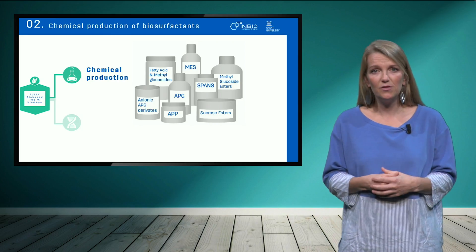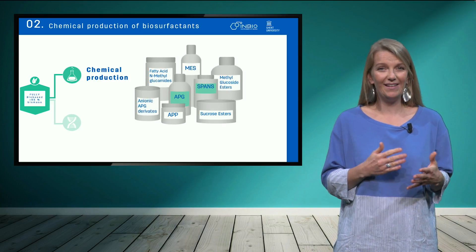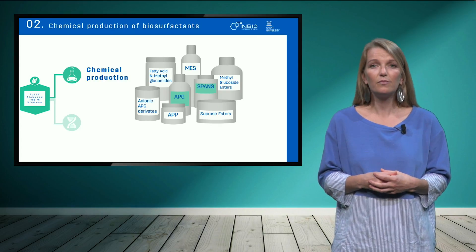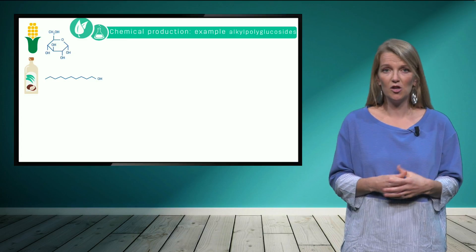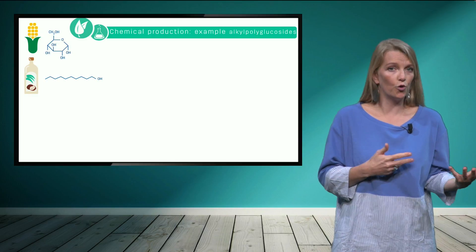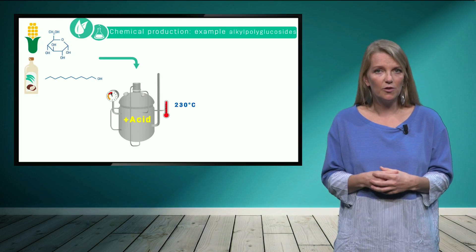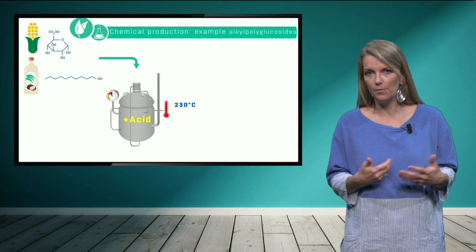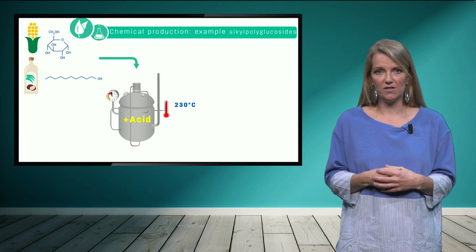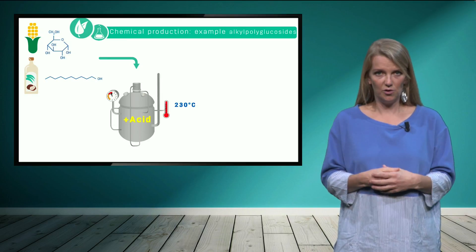I will first explain two examples of chemically produced biosurfactants: APGs or alkyl polyglucosides, and SPANS or sorbitan esters. For the production of APGs, glucose and fatty alcohols are used, which can for example be derived from corn and coconut oil respectively. These will be added into a chemical reactor and the reaction will take place at high temperatures — which is quite energy intensive — and under acidic conditions, with certain chemical catalysts added to enhance the reaction.